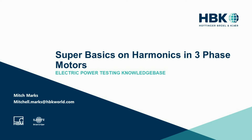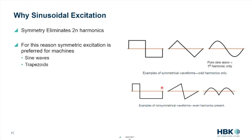Let's look at the motors more closely and examine the harmonics in our electric machines. Many of you probably know we have sine waves, or representations of sine waves, or square waves that we excite our machines with. We're going to see these as symmetrical square waves, symmetrical trapezoids, and symmetrical sine waves. The symmetry is really important because it eliminates the second-order harmonics — just by giving these things positive and negative parity, we can eliminate a lot of our second-order harmonics.